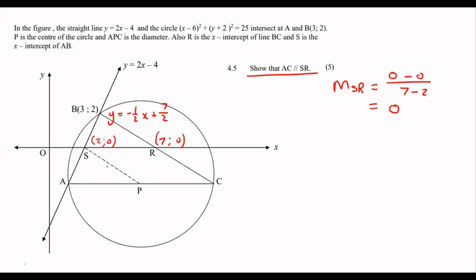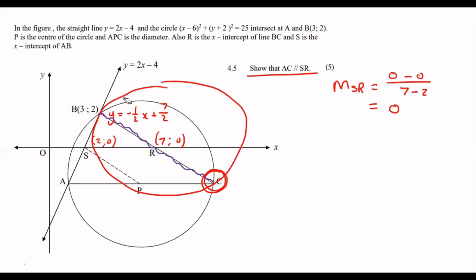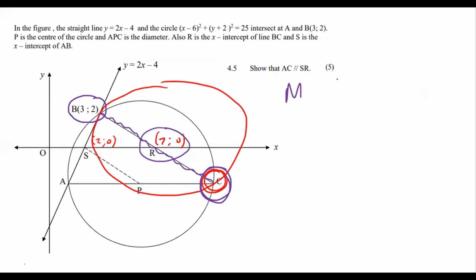If AC and SR are parallel, we need to show that AC also has a gradient of zero — because if the gradients are the same, then the lines are parallel. To find the coordinates of C, we use the midpoint formula in reverse. We know the center of the original circle is at (7, 0) and B is at (3, 2), so we solve for C.